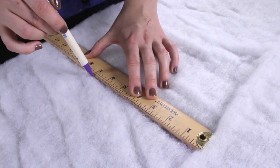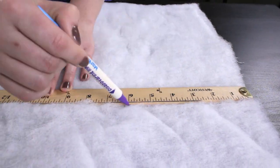Measure and cut a 12 1/2 inch by 16 1/2 inch rectangle out of the batting.